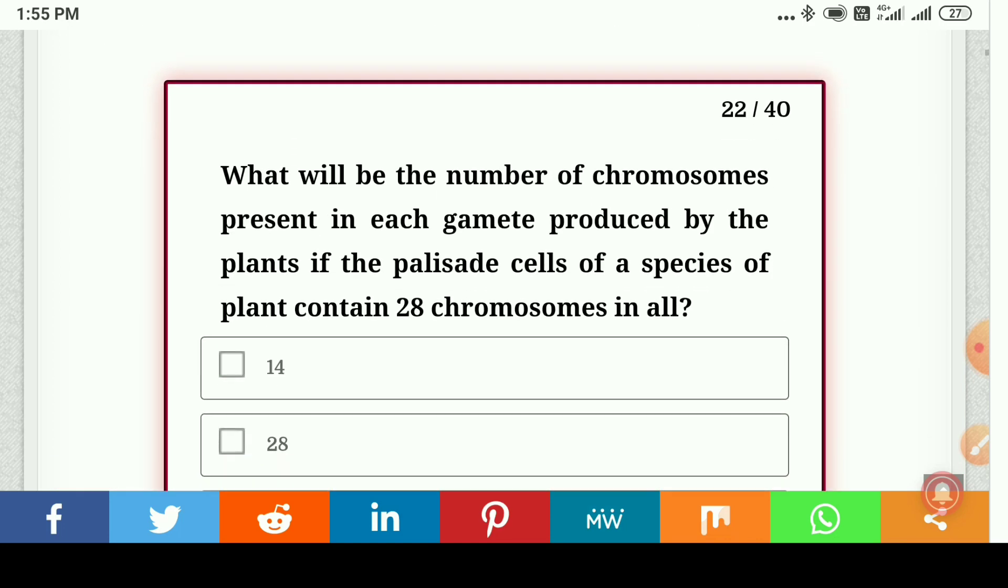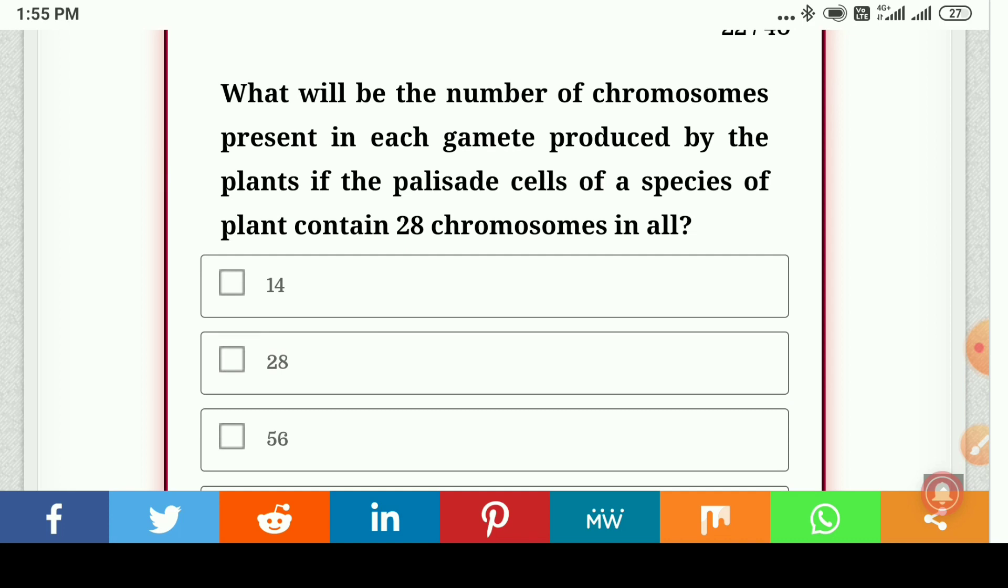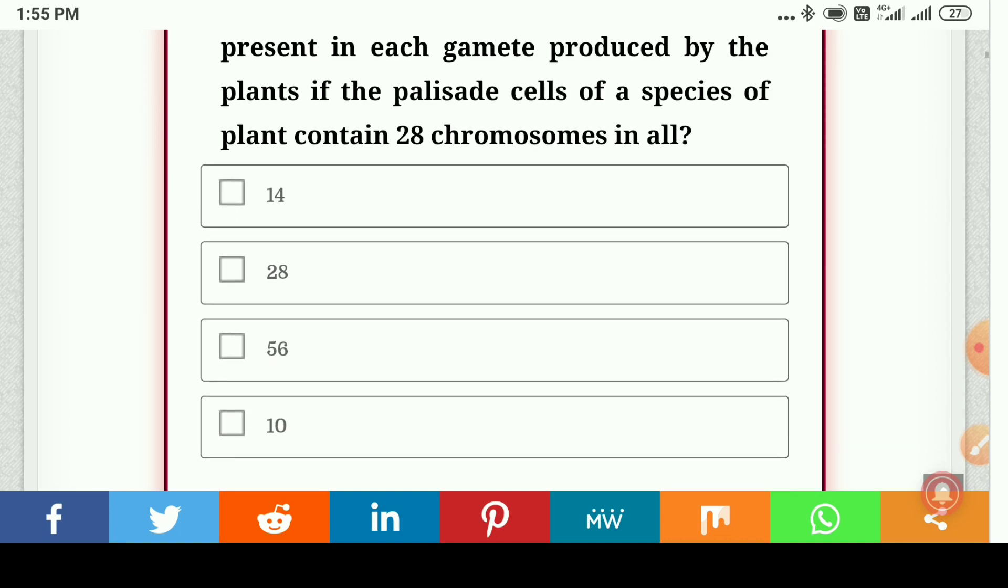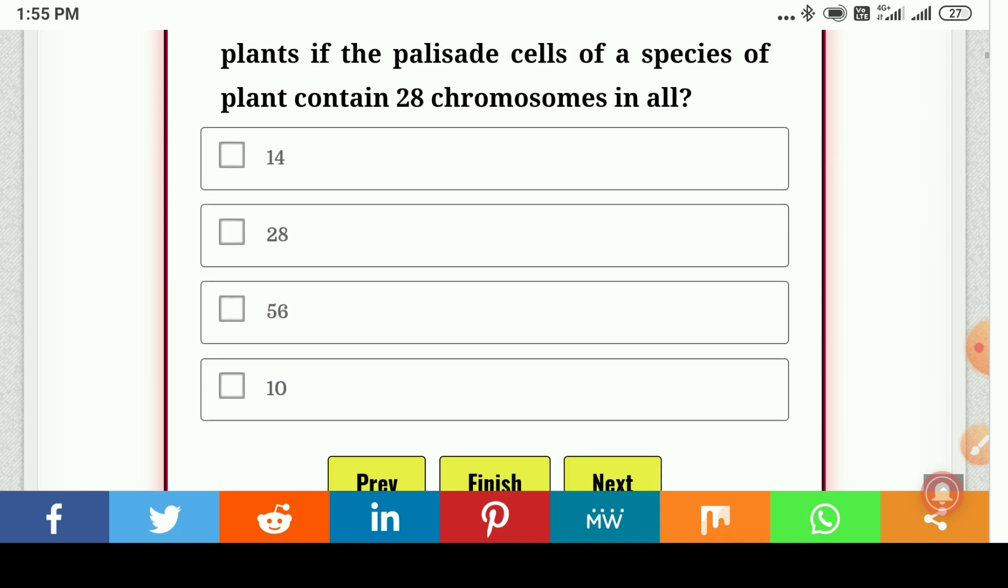What will be the number of chromosomes present in each gamete produced by the plants if the palisade cells of a species of plant contain 28 chromosomes: 14, 28, 56, or 10? So here the answer is 14.